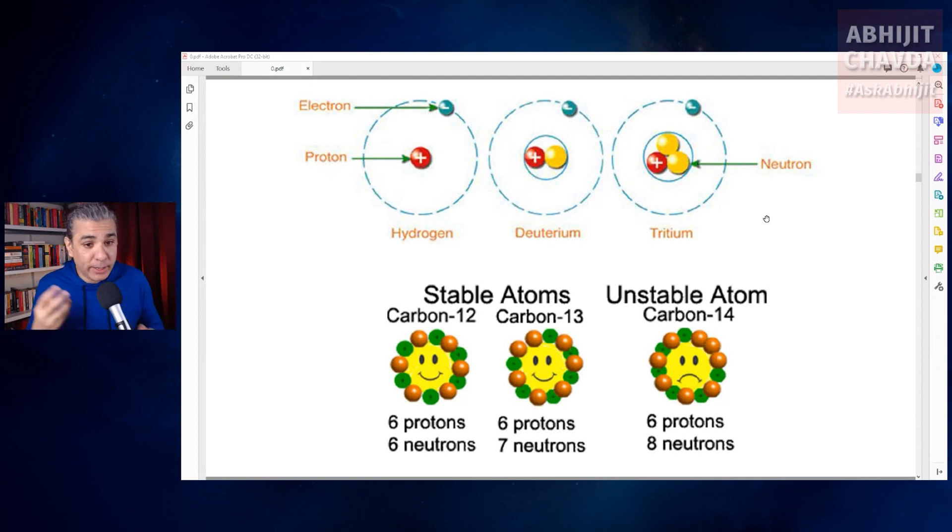Hydrogen has three isotopes: protium, deuterium, and tritium. Carbon has three isotopes: carbon-12, carbon-13, and carbon-14.